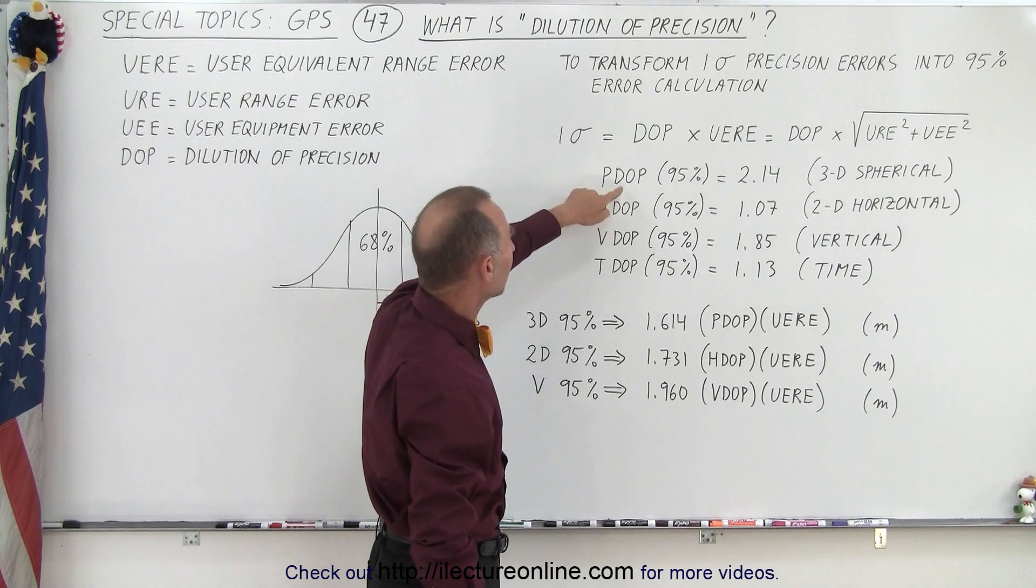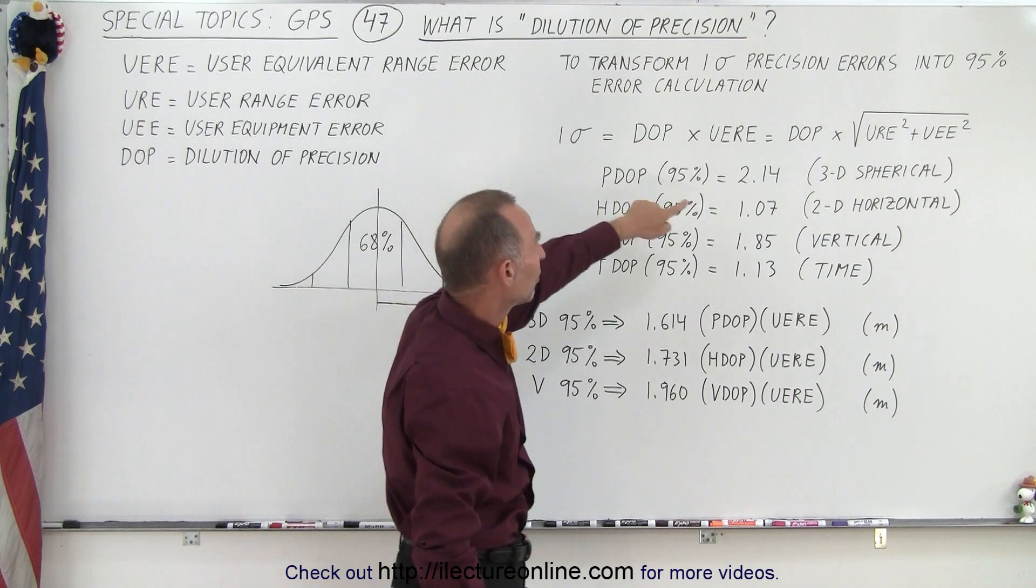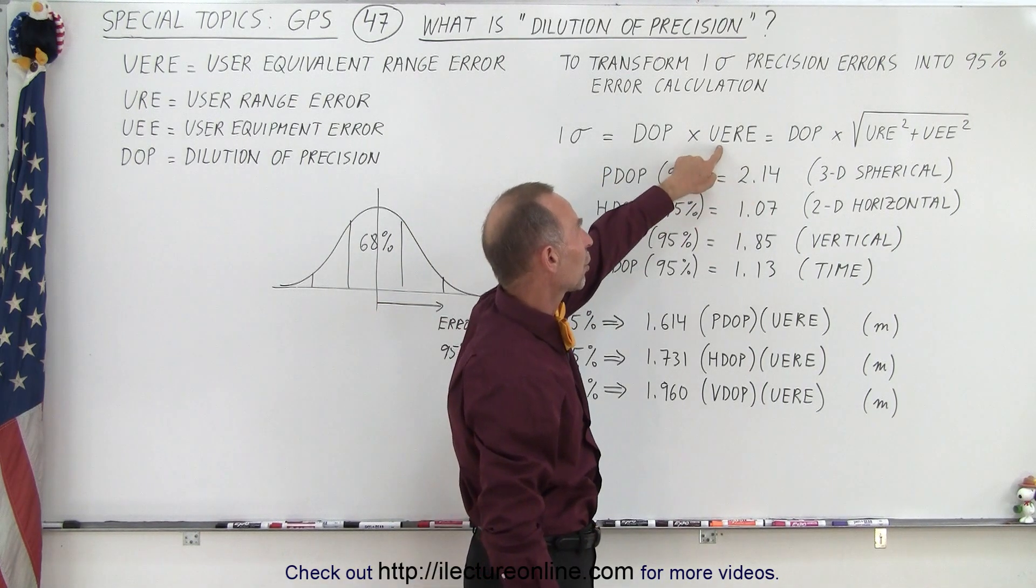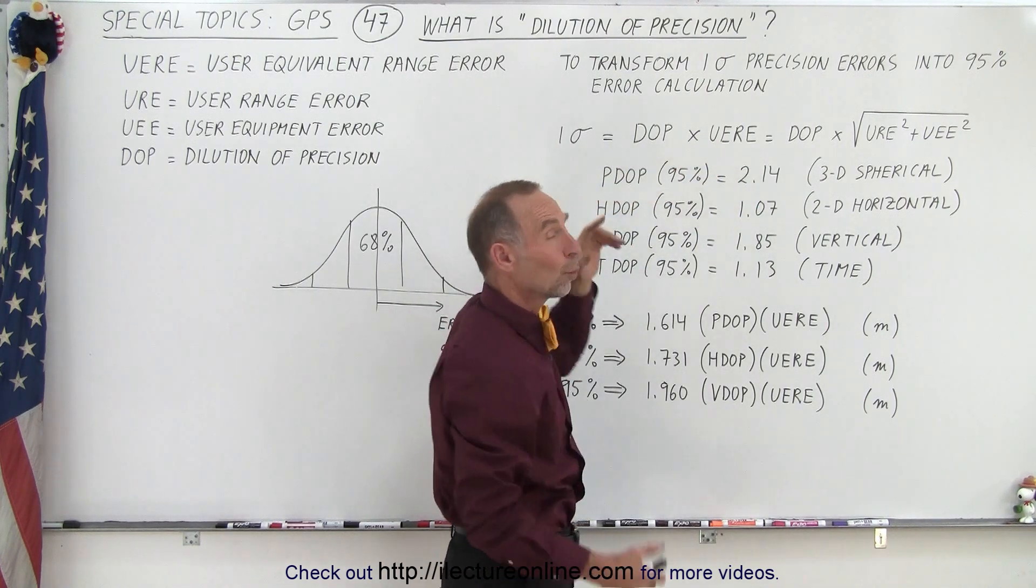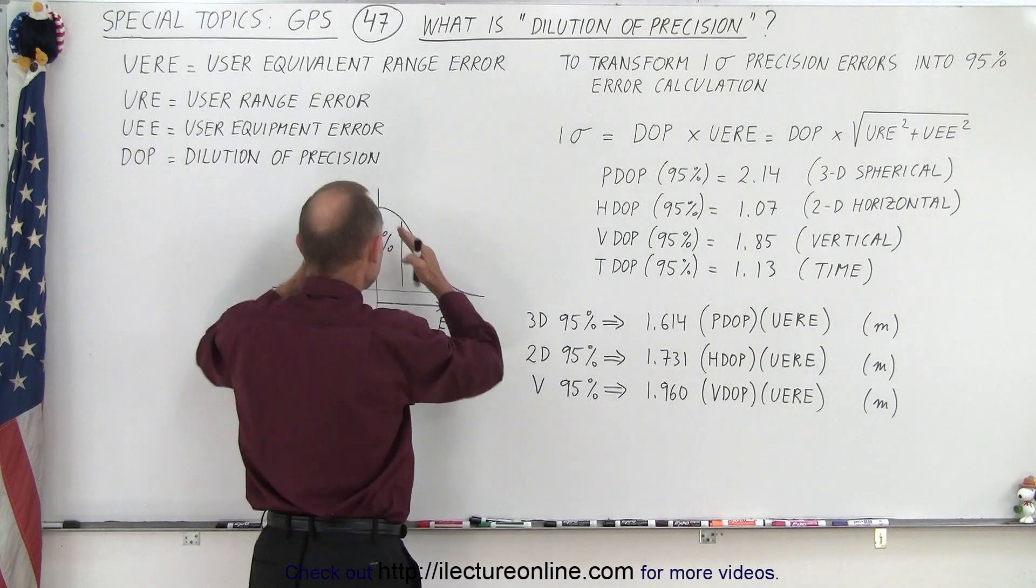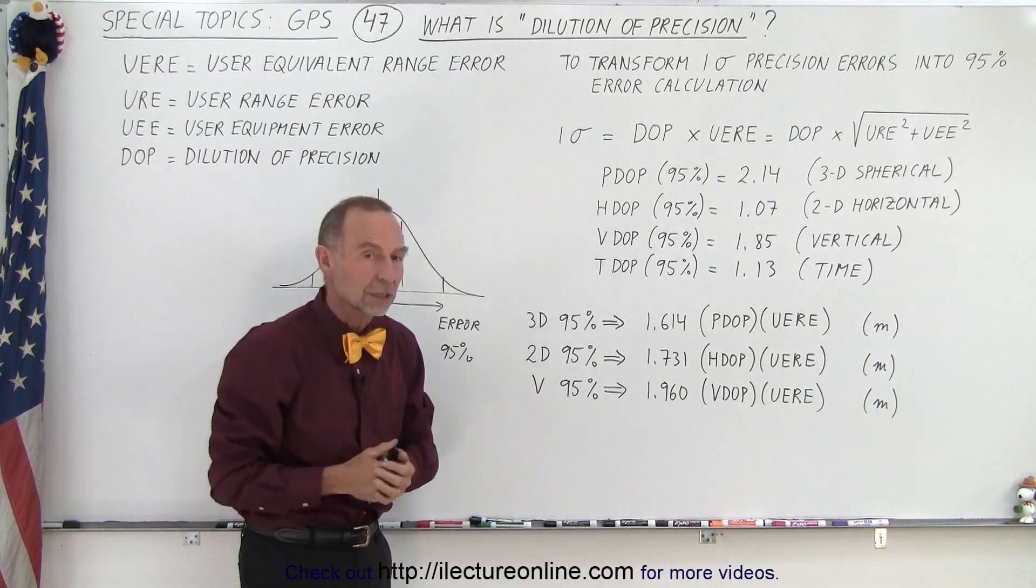then we simply take the PDOP value, and that is equal to 2.14. So whatever your UERE value was, we multiply it times 2.14, to get the one sigma variation in the expected range calculations.